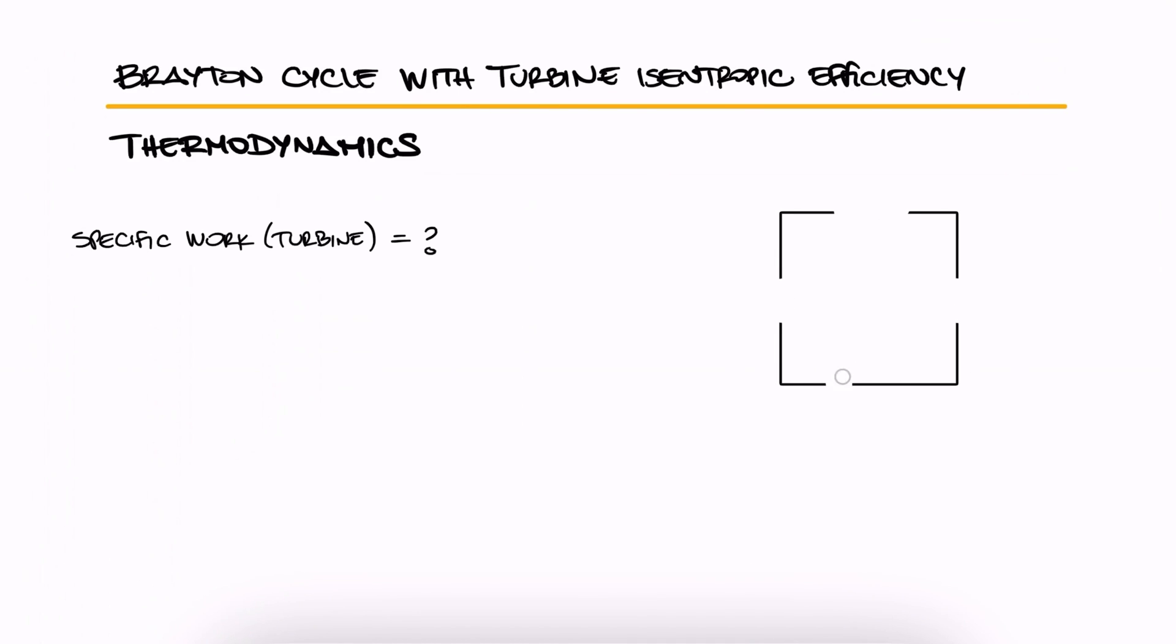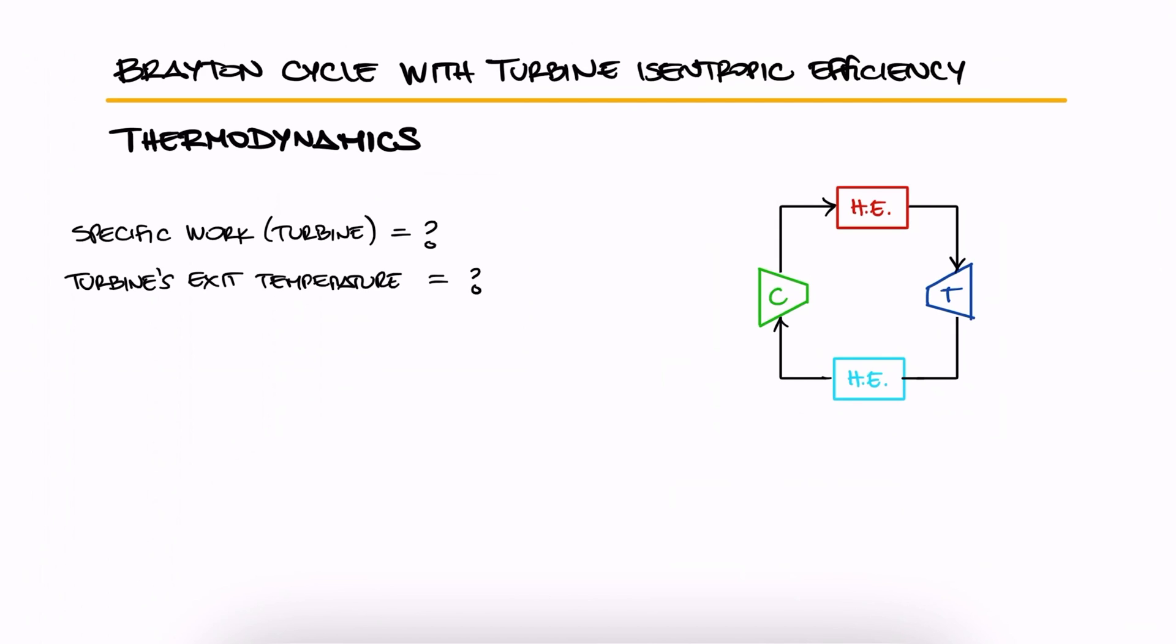What is the turbine's specific work and the temperature at the exit of the turbine of the following Brayton cycle? Air enters the compressor at 100 kilopascals and 298 kelvin, the pressure leaving the compressor is 1 megapascals, and the maximum temperature of the cycle is 1240 kelvin.